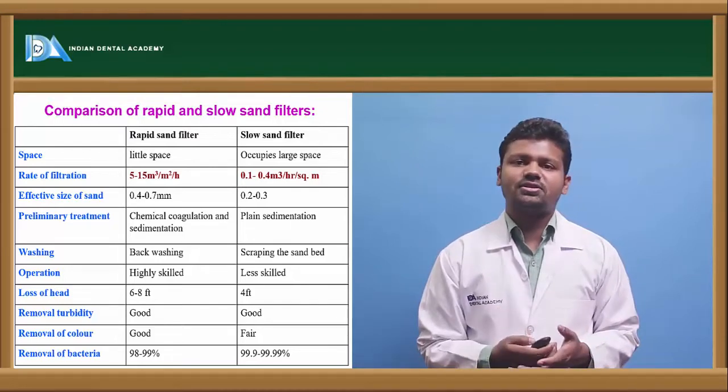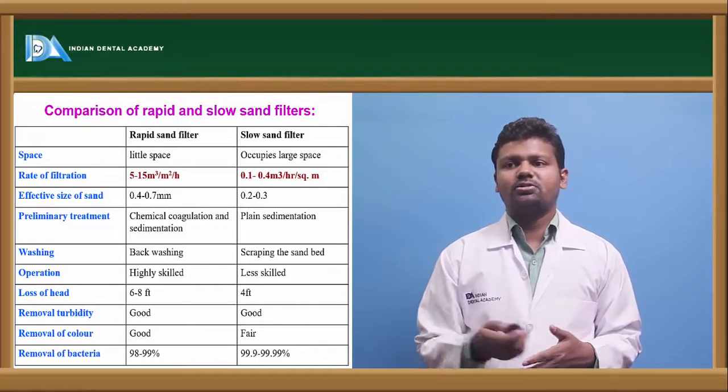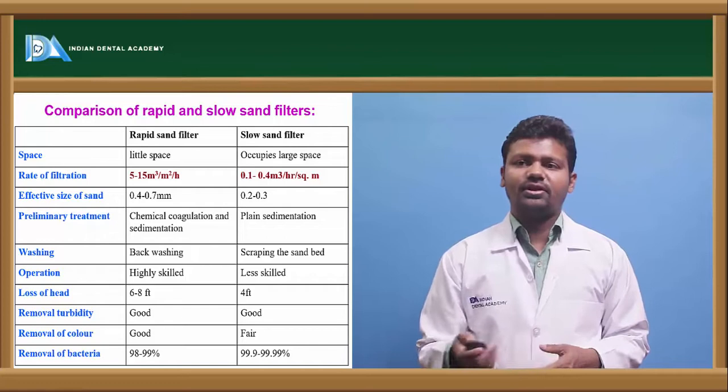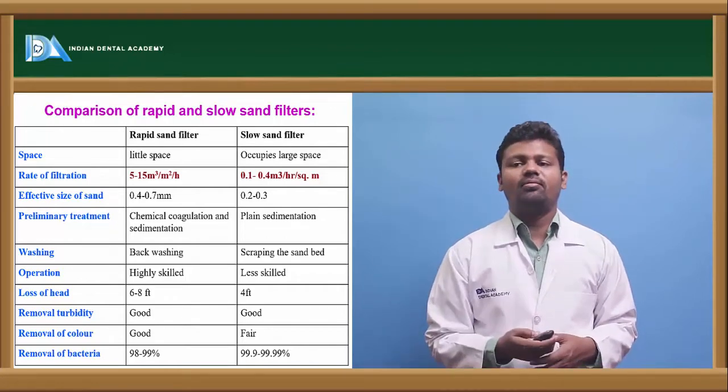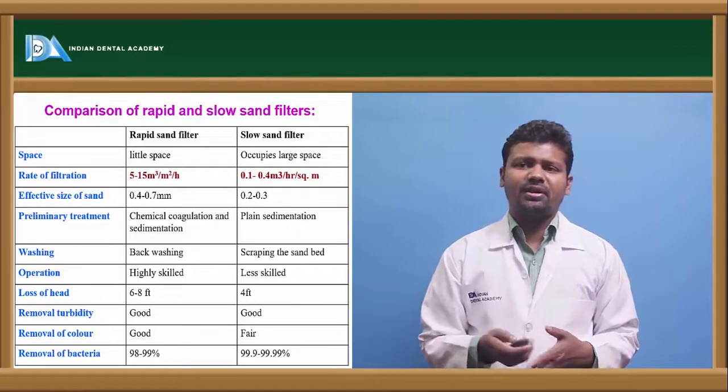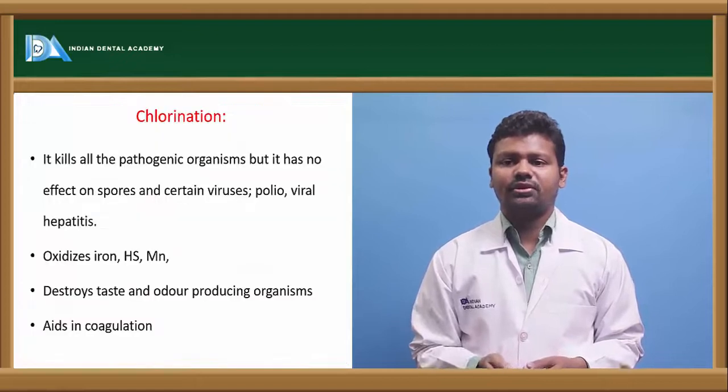These are the comparison between slow sand filters and rapid sand filters. Rate of filtration is 5 to 15 meter cube in rapid, whereas in slow sand filters it is much slower. Removal of bacteria in both are almost same - 98 to 99% in rapid sand filters and 99 to 99.9% in slow sand filters.